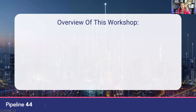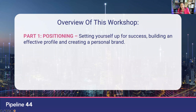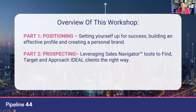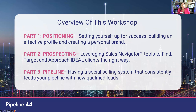There are three parts I'm going to give you in this workshop. We know what the mistakes are and where people are failing. Part one is about positioning — setting yourself up for success, building an effective profile and creating a personal brand. Part two is prospecting — how to leverage Sales Navigator and all its tools to approach and target your ideal clients in the right way. And finally, pipeline — how to have a social selling system that consistently feeds your pipeline with new qualified leads. Positioning, prospecting and pipeline — we're going to tackle them one at a time.